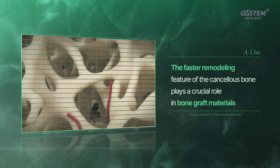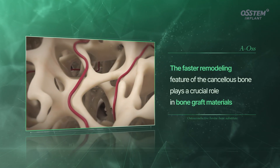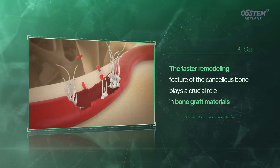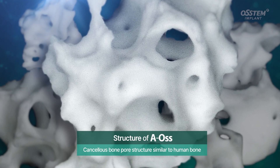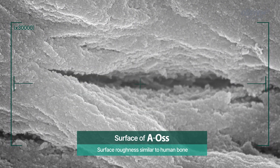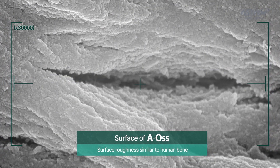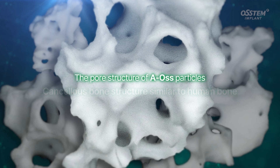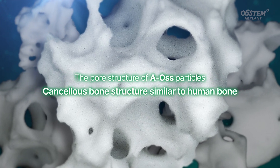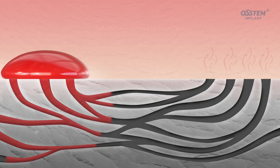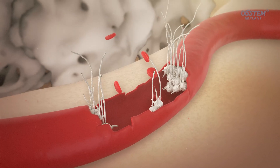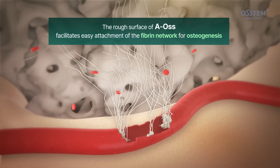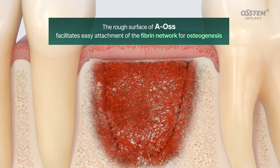For bone graft materials, it is important to have a faster remodeling feature. Similar to the human bone, AOS particles have a cancellous pore structure and contact surface. The pore structure of AOS particles, which is similar to human cancellous bone, helps establish a suitable environment for blood flow, and the rough surface facilitates easy attachment of the fibrin network, helping osteogenesis.